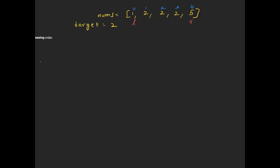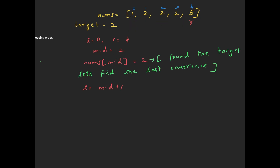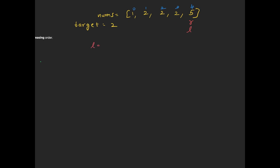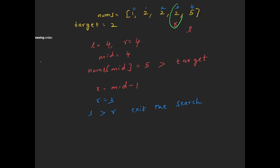Now let's consider this sorted array example and try to find the last occurrence of the target, or the ending index of the range. We begin by initializing the left and right pointers. We calculate the mid index, which is 2, and the value at this mid is also 2. We have found the target but we need to find the last occurrence. To do this, we shift the left pointer to mid plus 1. We update the pointers and now we have found the target again, so we continue the search for the last occurrence by shifting the left pointer once more to mid plus 1. Now the mid is 4 and the value at mid is 5. Since it is greater than the target, we shift the right pointer to mid minus 1. Now the right pointer is at index 3. Since the left pointer is greater than the right pointer, we exit the search. At this point, the right pointer is at the last occurrence of the target value.